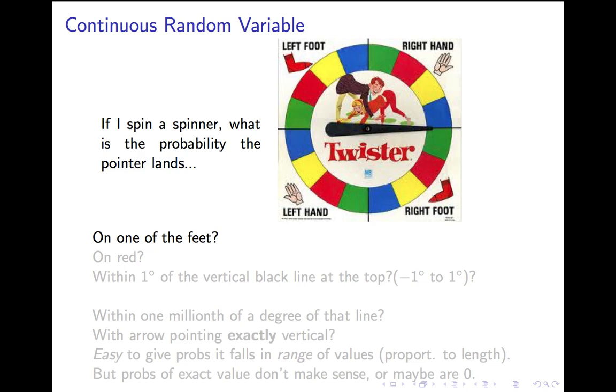I want to ask you some questions and see if your intuition is enough to answer them. So first of all, what's the probability when you spin this spinner that it lands on one of the feet? You can see the upper left-hand corner and the lower right-hand corner are labeled by the two feet. The probability, of course, is one-half, right? Because half of the circle is labeled left or right foot.